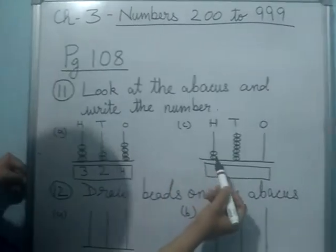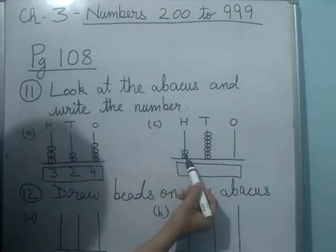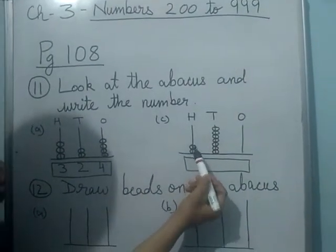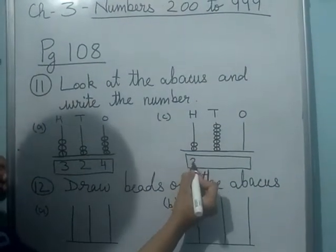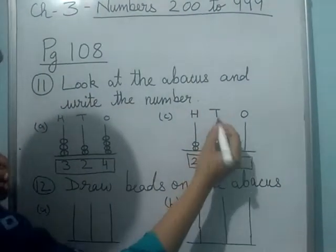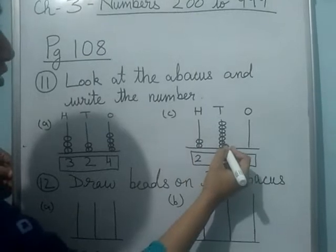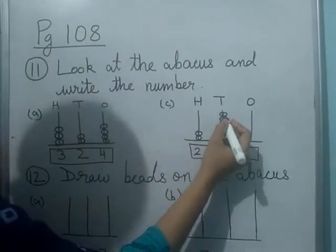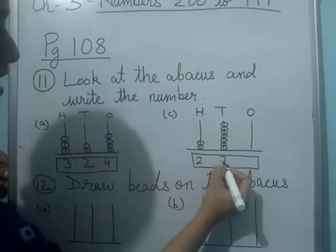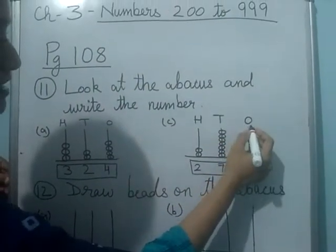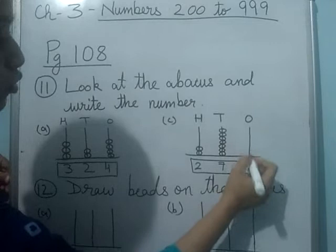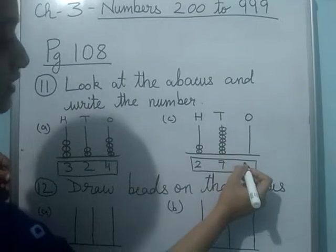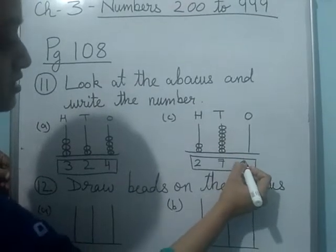Now here, how many beads in 100's place? 1, 2. In 10's place, 1, 2, 3, 4, 5, 6, 7. And in 1's place there are no beads. So you will write 0.